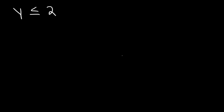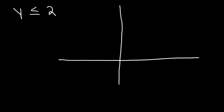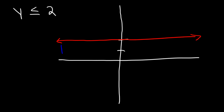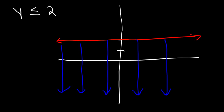Try this one: y is less than or equal to 2. This is going to be another horizontal line at 2. But because it's less than or equal to, it's a solid line as opposed to a dashed line. And because it's less than, we need to shade below it rather than above it. And so this is the answer.